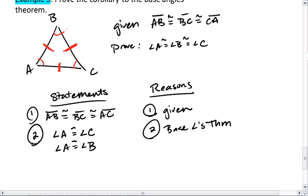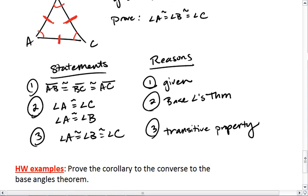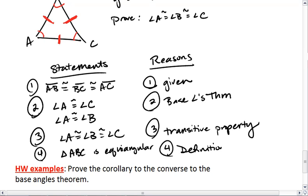We can then write that angle A is congruent to angle B is congruent to angle C, by the transitive property. This tells us that triangle ABC is equiangular, by the definition of equiangular.